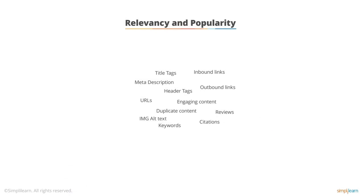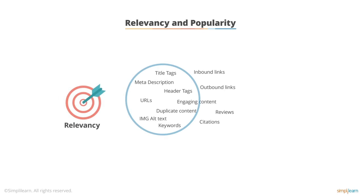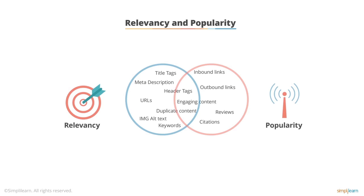Search engine optimization is very complex. When you're trying to understand it for the first time, I find it's best to break it into general concepts you already have some understanding of. When I look at the hundreds of signals that go into SEO, I break all of them up into either relevancy or popularity — because sometimes it's both. Throughout this chapter, we're going to break all the signals into these two areas so you can rely on what you already know as an anchor point for these new ideas.